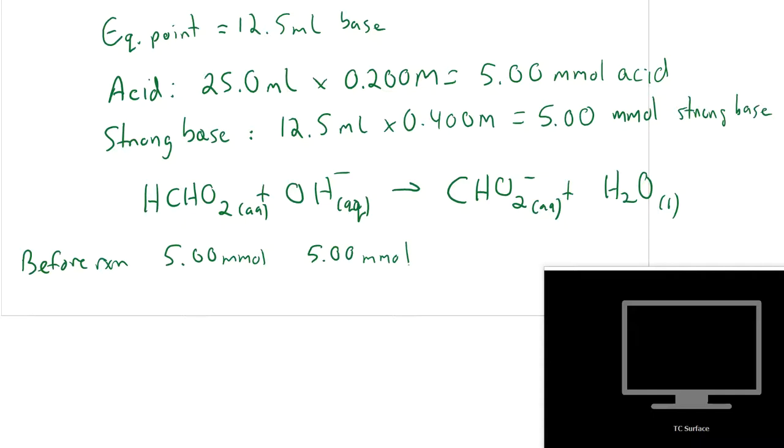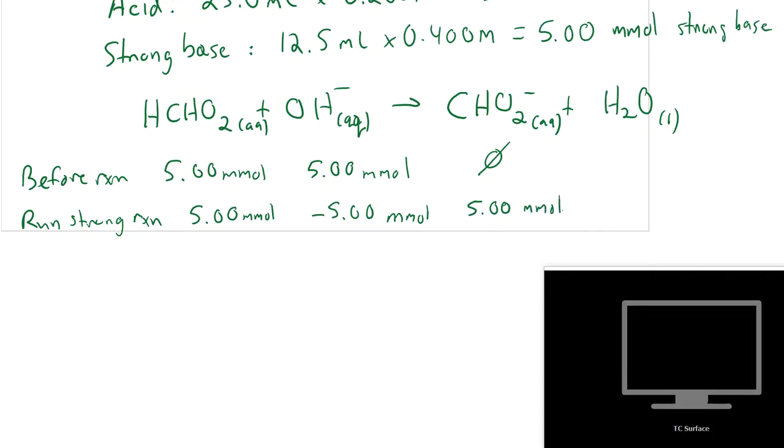Which is what we find when we do the complex ions. So we're going to run the reaction, run the strong reaction. And we're going to use up all of our OH minus. And by the way, at the start, we didn't have any of the formate ions. So I'm going to put a zero up there. I forgot to put that at the start. And we don't care about water because it doesn't appear in our K expression. So if we use up 5 millimoles of OH minus, we're going to use up 5 millimoles of our formic acid. And we're also going to create 5.0 millimoles of our formate ion.